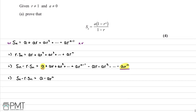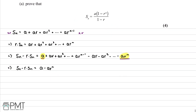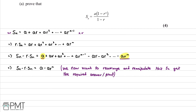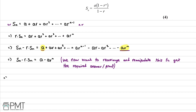We now rearrange to get the required answer. On the left hand side we take a common factor of Sn out, leaving Sn times 1 minus r. On the right hand side we take a common factor of a out, giving a lots of 1 minus r to the power of n.